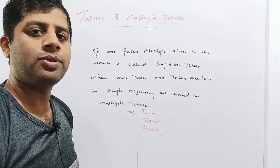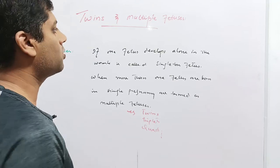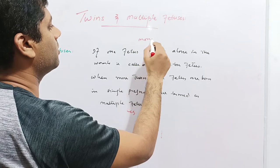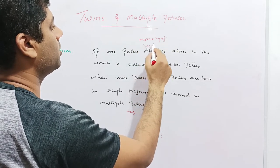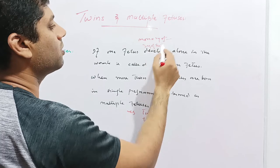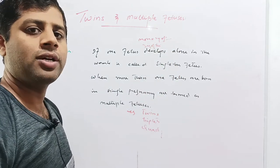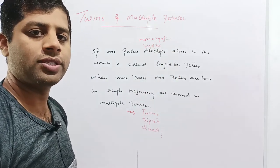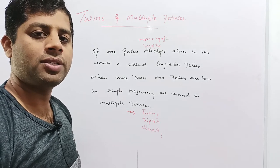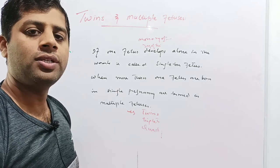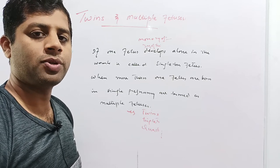It is pertinent to mention that the types of multiple fetuses are just like twins — monozygotic and dizygotic — meaning maternal fetuses and fraternal fetuses respectively. The same factors of genetics, race, previous pregnancies, increased age, and assisted reproductive technology are responsible for multiple fetus production.